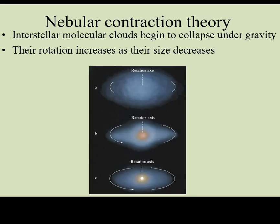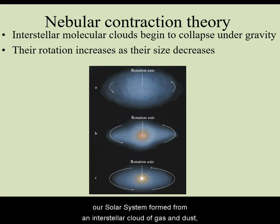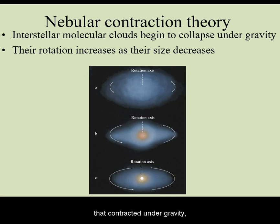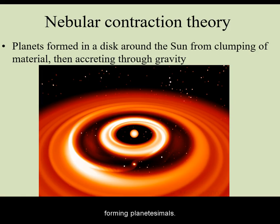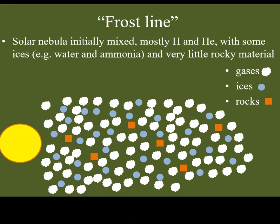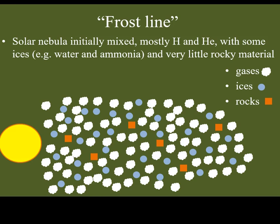As a reminder, our solar system formed from an interstellar cloud of gas and dust that contracted under gravity and then formed into a rotating disk. Once in a disk, condensed particles began to further clump, forming planetesimals. The disk, called the solar nebula, was initially evenly mixed in material — mostly made of hydrogen and helium, with smaller amounts of ices and rocks.